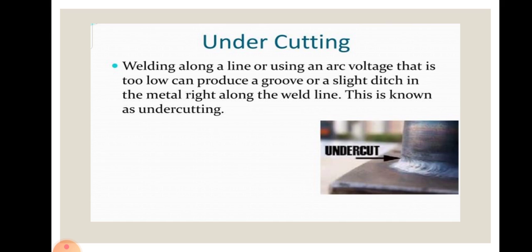Next one is undercutting. In undercutting, there is a groove melted into the base metal adjacent to the toe of the weld. This weakens the weld as the groove reduces the thickness of the plate and thus the area along the weld bead. Welding along a line or using an arc voltage that is too low can produce a groove or slight notch in the metal right along the weld line.